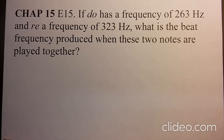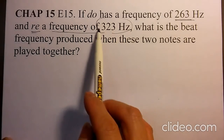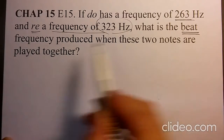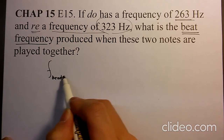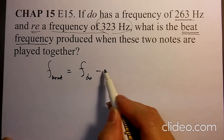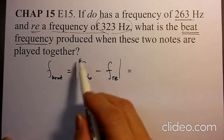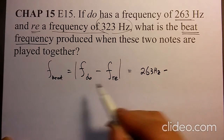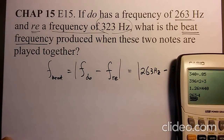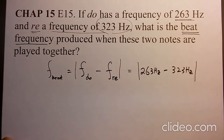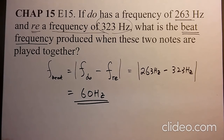Let's solve chapter 15 E15. If dho has a frequency of 263 hertz and re has a frequency of 323 hertz, what is the beat frequency when those two notes are played together? The beat frequency F-beat equals the absolute value of F-dho minus F-re, giving the absolute value of 263 minus 323, which equals 60 hertz.